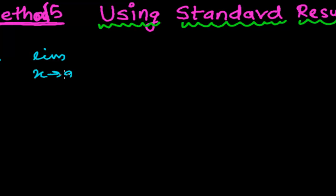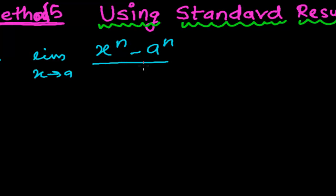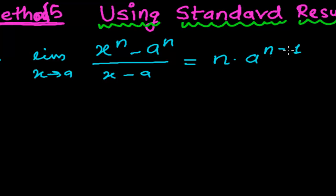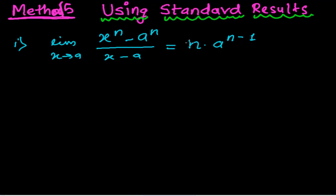The first standard result is: limit when x tends to a of (xⁿ - aⁿ) divided by (x - a). If you solve this kind of expression, you will always get the result n times a to the power n minus 1. This is the standard result — if you solve this kind of problem any time, anywhere, you will always get this result. That's why we call it a standard form or standard result. From now on, if we see this kind of problem, we can easily write this directly.